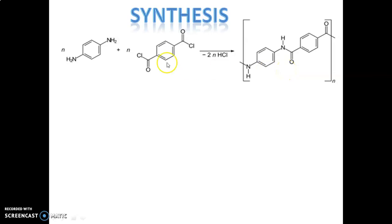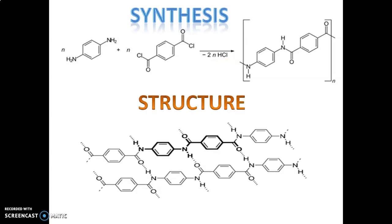That is the structure of Kevlar, or polyparaphenylene terephthalamide. You can see an interesting thing: there are a number of hydrogen bonds between hydrogen and nitrogen atoms. This type of hydrogen bonding is called intramolecular hydrogen bonding — it exists between the molecules. Due to the existence of this intramolecular hydrogen bonding, this polymer is highly strong. That is the main reason why we use this particular material for the preparation of body armor.